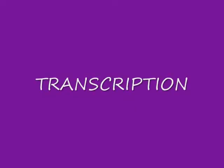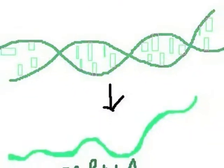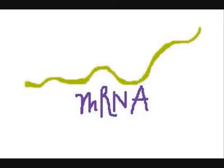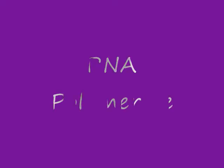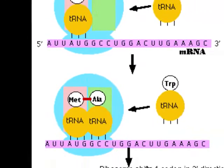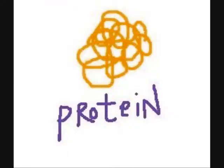Now, back to the topic. Transcription is the process by which the information contained in a section of DNA is transferred to a newly assembled piece of messenger RNA. It is facilitated by RNA polymerase and transcription factors. Eventually, this mature mRNA finds its way to a ribosome, where it is translated into proteins and will manifest in the organism as its phenotype.